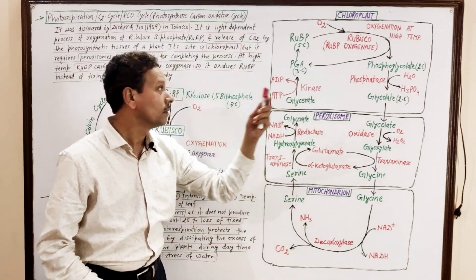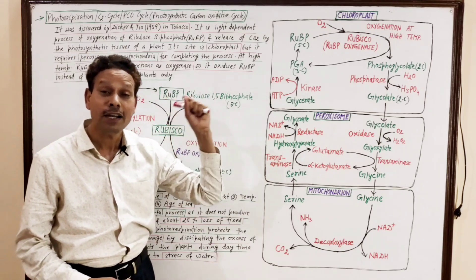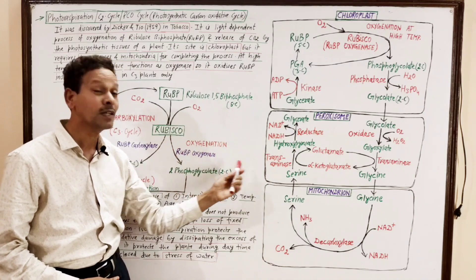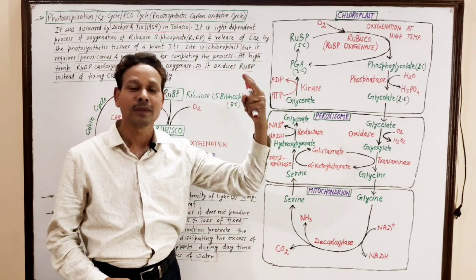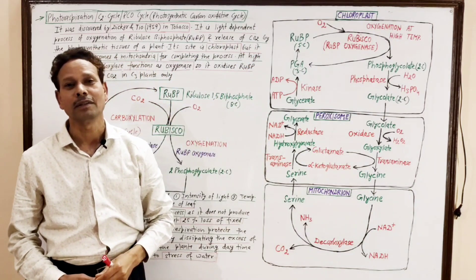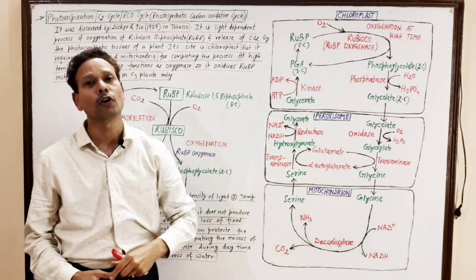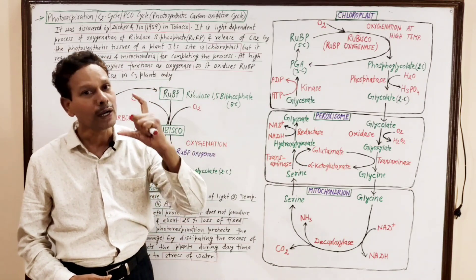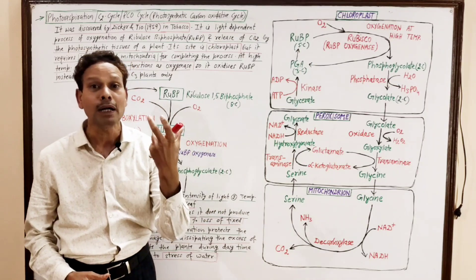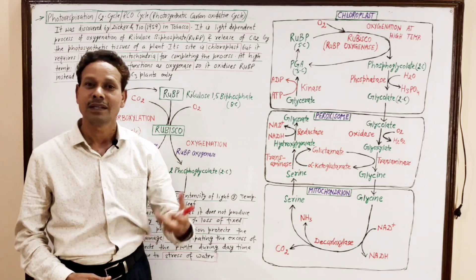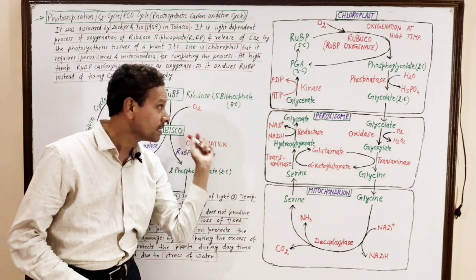C3 plants are not well adapted to tropical conditions at high temperature. In these plants, the Rubisco enzyme at high temperature undergoes oxygenation. But in C4 plants, there is a special anatomy — Kranz anatomy — with two types of chloroplasts, called dimorphic chloroplasts: one type in mesophyll cells and another special type in bundle sheath cells. C4 plants are well adapted to high temperature and tropical conditions.